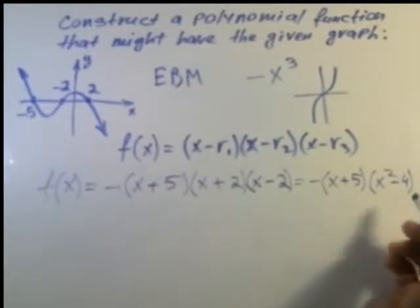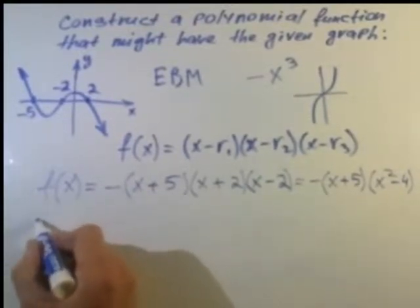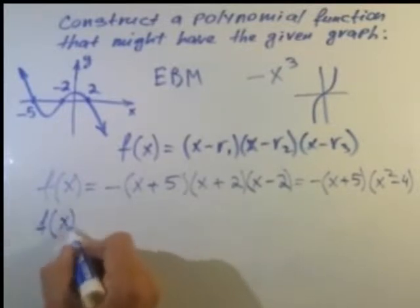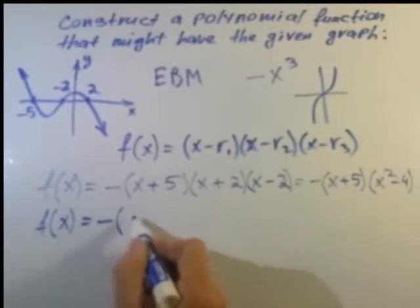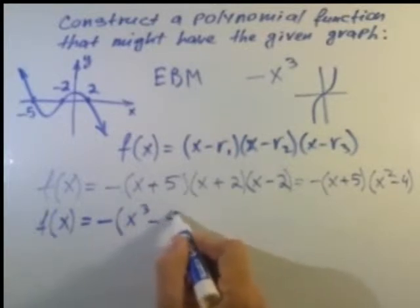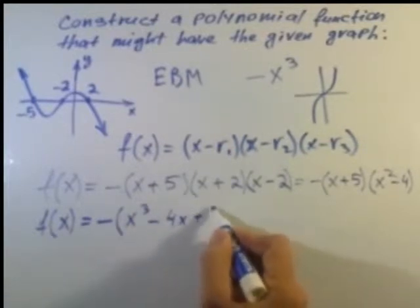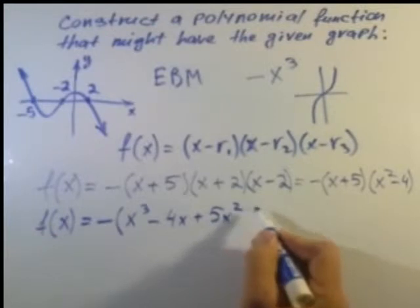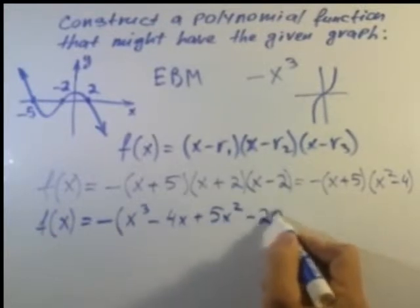When we multiply all this we get the following: negative (x cubed plus 5x squared minus 4x minus 20).